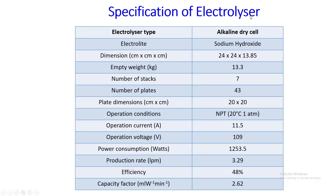Here is a specification of an electrolyzer — the type is alkaline dry cell, electrolyte is sodium hydroxide. Specifications include dimension, weight, number of stacks, number of plates, plate dimension, operating conditions, operating current, operating voltage, and power consumption. The production rate is about 3.29 liters per minute, efficiency is 48 percent, and capacity factor is about 2.62 milliliters per watt per minute.